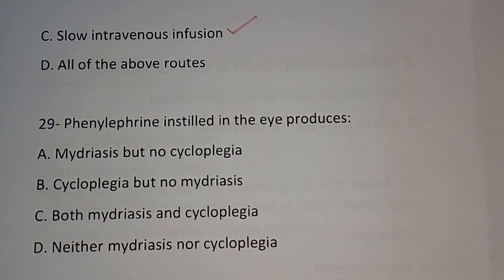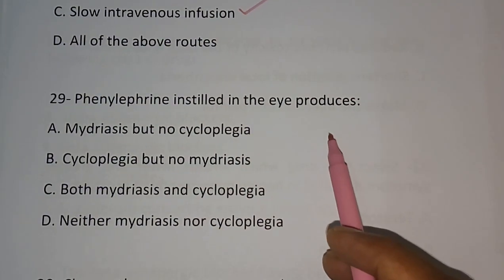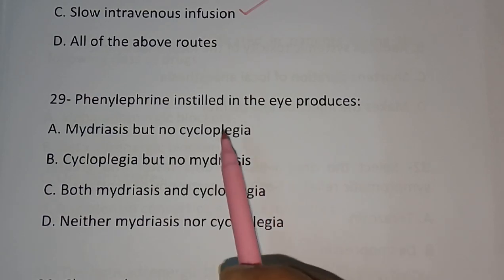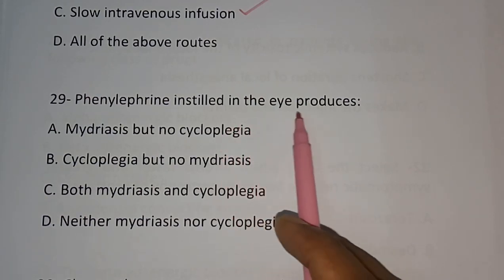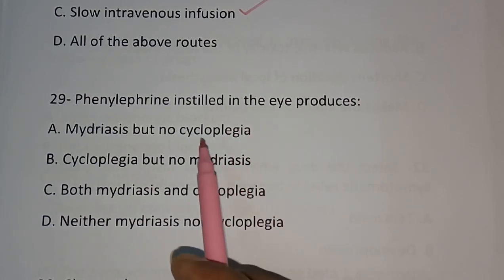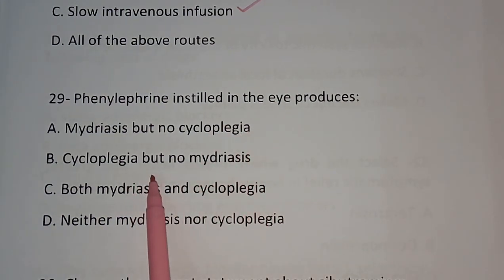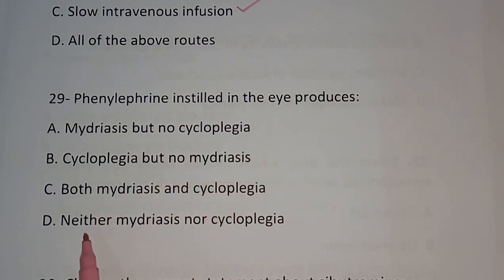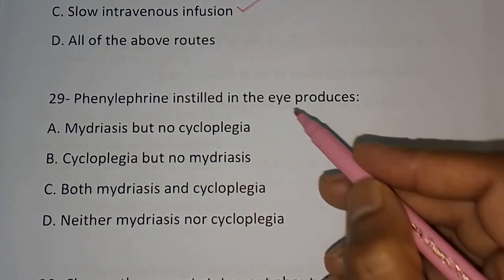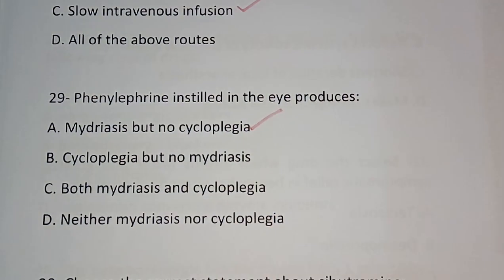Question number 29: Phenylephrine instilled in the eye produces — Mydriasis but no cycloplegia, Cycloplegia but no mydriasis, Both mydriasis and cycloplegia, Neither mydriasis nor cycloplegia. The correct answer is option A: Mydriasis but no cycloplegia.